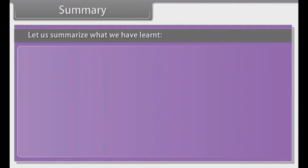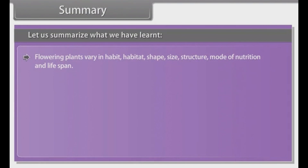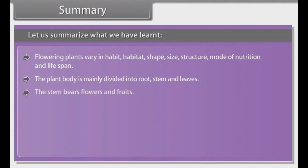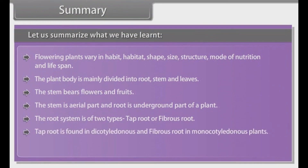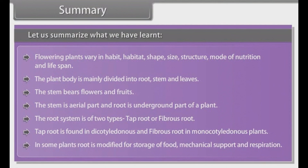Summary: Flowering plants vary in habit, habitat, shape, size, structure, mode of nutrition and lifespan. The plant body is mainly divided into root, stem and leaves. The stem bears flowers and fruits. The stem is the aerial part and root is the underground part of a plant. The root system is of two types: tap root or fibrous root. Tap root is found in dicotyledonous and fibrous root in monocotyledonous plants. In some plants, root is modified for storage of food, mechanical support and respiration.